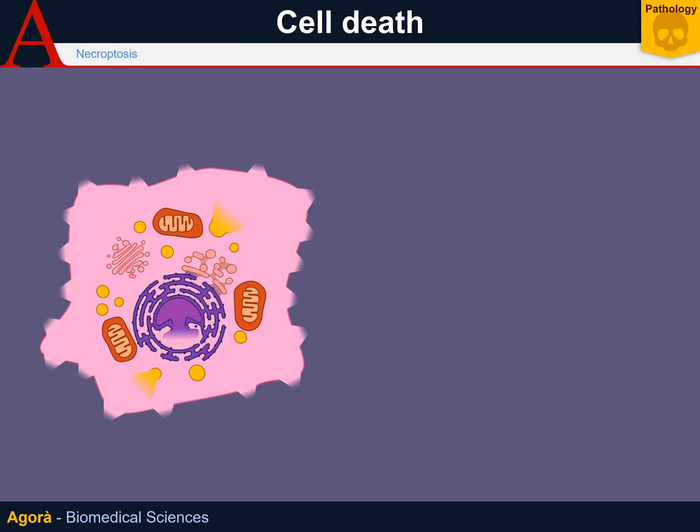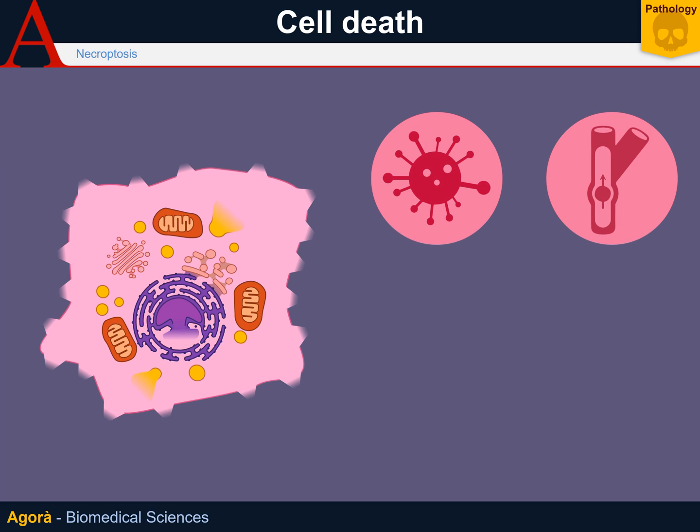Necroptosis is a form of programmed necrosis, and therefore a messy form of cell death with cytoplasm spilling out of the cell. Necroptosis occurs in two cases: viral infections and ischemia-reperfusion damage.